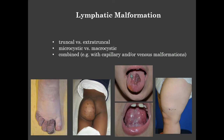Sometimes there's bleeding into the blebs, and there can be problems with halitosis, feeding, speech, and orthodonture. If there's more involvement, there can be bony abnormalities as well with bony overgrowth of the jaw. This is a patient with lymphatic malformation in the leg—a deeper lymphatic malformation with superficial blebs as well.